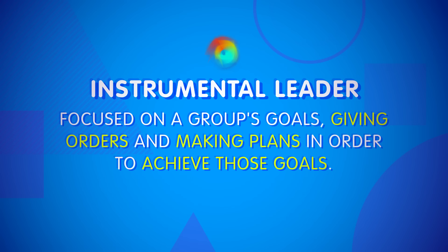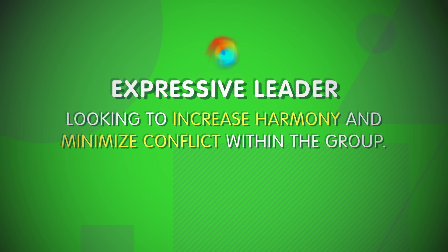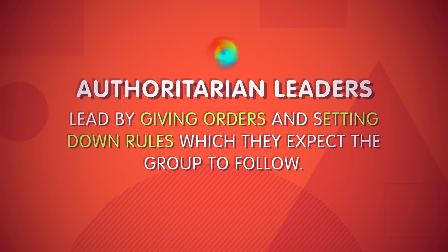An instrumental leader is focused on a group's goals, giving orders and making plans in order to achieve those goals. An expressive leader, by contrast, is looking to increase harmony and minimize conflict within the group. They aren't focused on any particular goal — they're just trying to promote the well-being of the group's members. And just as leaders may differ in what they're trying to do, so too can they go about doing it in different ways. I'm talking here about leadership styles, of which we have three.